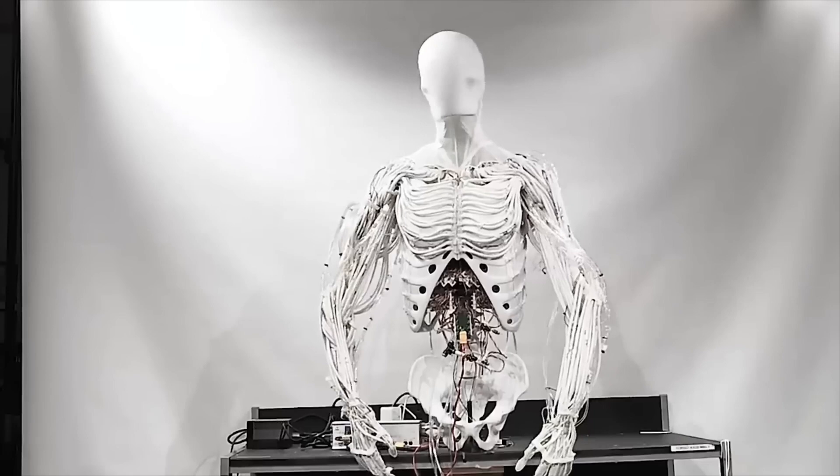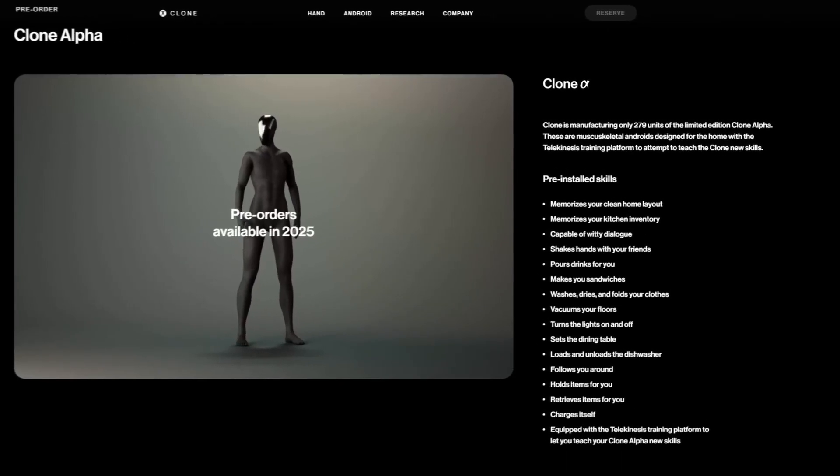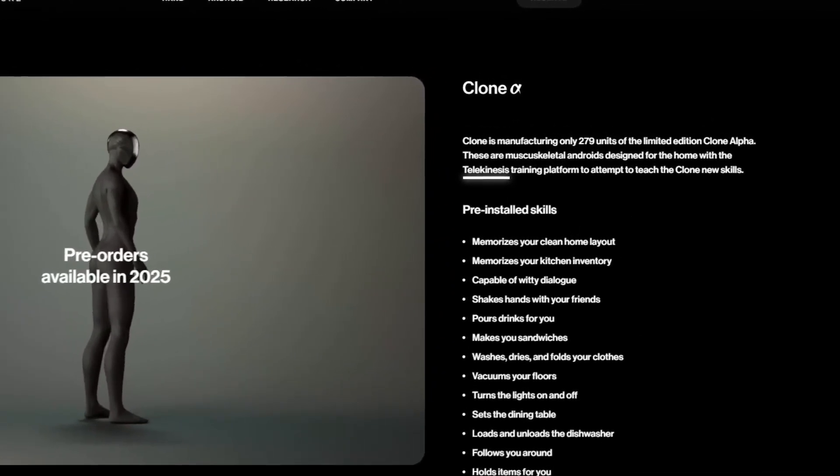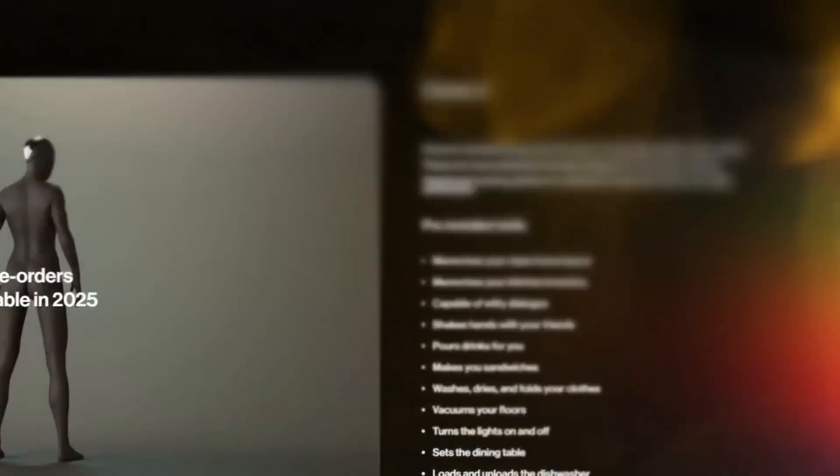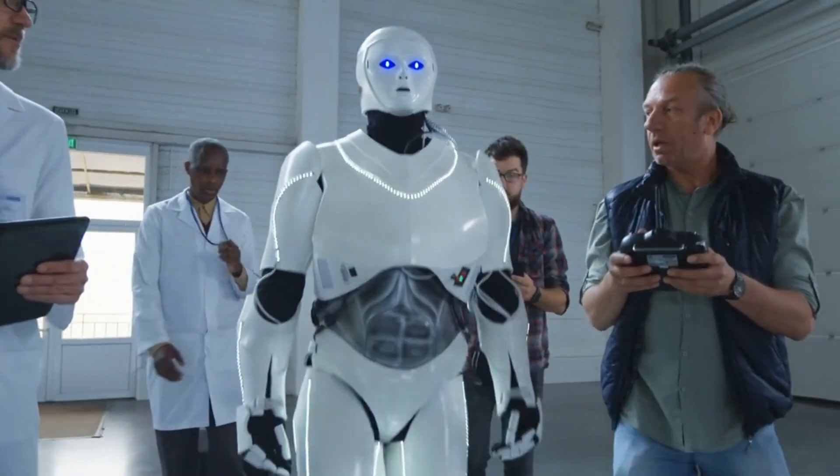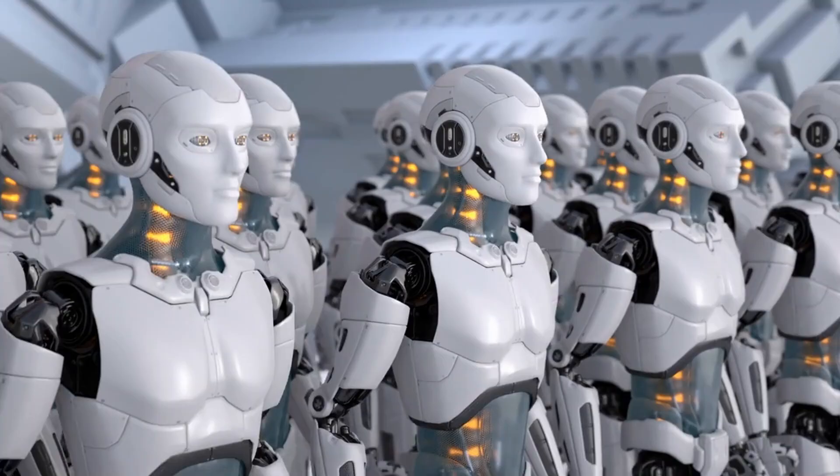And if you're thinking, okay, but what if I wanted to do something totally unique? Well, Clone Alpha has you covered. It includes a platform called telekinesis, which lets you teach it new skills. You guide the robot through a new task, program its responses, and boom - it's ready to perform that task whenever you need it. The possibilities here are pretty much endless.